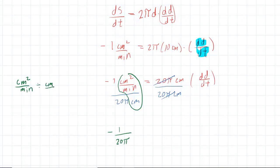Remember, we can put the centimeters here over 1. When you divide, you can also multiply by the reciprocal. That's an equivalent operation. So you have centimeters squared over minutes, multiplied by 1 over centimeters. These would cancel out so that you're left with just centimeters per minute. So you have the final answer as negative 1 over 20π centimeters per minute is equal to the rate of change in diameter.